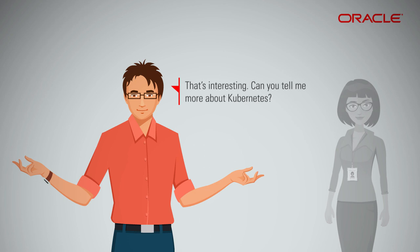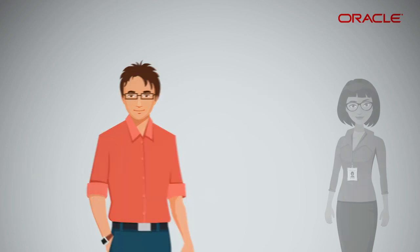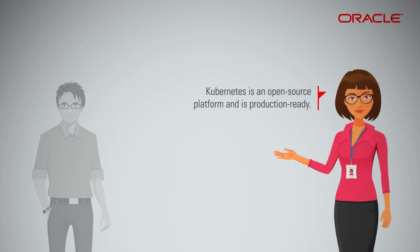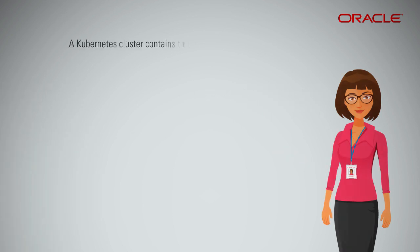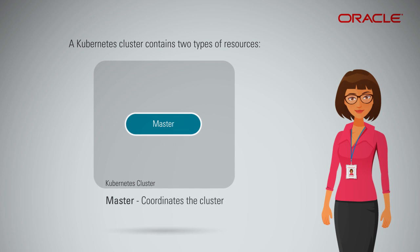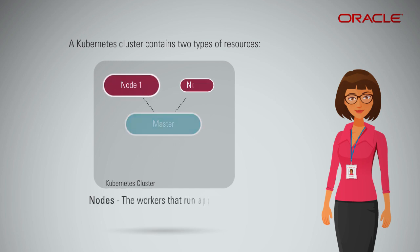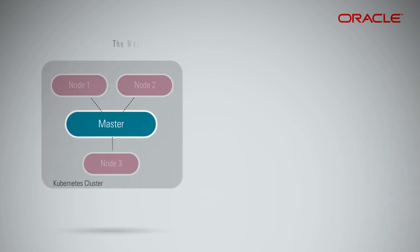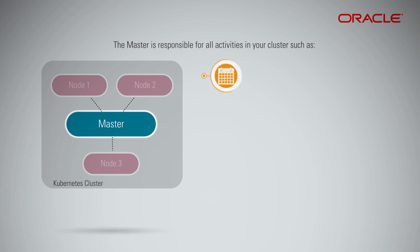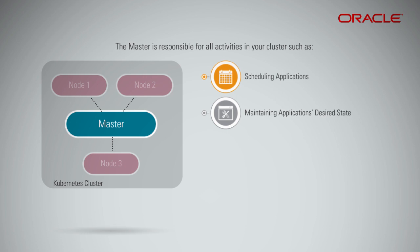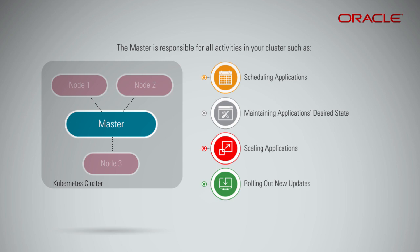Can you tell me more about Kubernetes? Kubernetes is an open-source platform and is production-ready. A Kubernetes cluster contains two types of resources: the master, which coordinates the cluster, and nodes, which are the workers that run applications. The master is responsible for all activities in your cluster, such as scheduling applications, maintaining the application's desired state, scaling applications, and rolling out new updates.